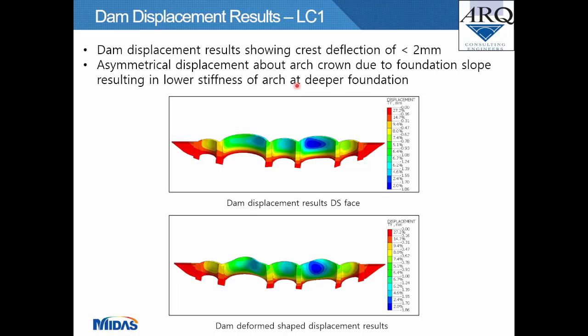The first analysis results reviewed are dam displacements. For the Olyphants Put dam, the crest deflection is no more than 2 mm. Two displacement contour plots are shown — one without deformed shape and one with — revealing asymmetrical displacement about the arch crown due to the foundation slope, resulting in lower stiffness and higher displacement at the deeper foundation side.